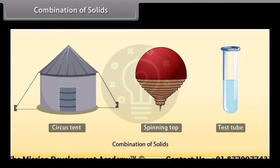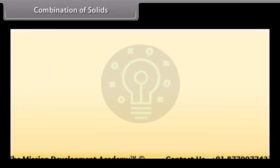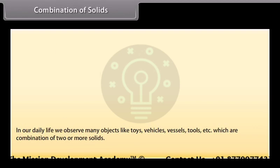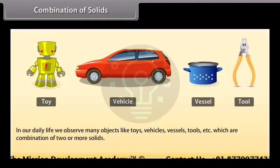A circus tent is a combination of a cone and a cylinder. A spinning top is a combination of a hemisphere and a cone. And a test tube is a combination of a hemisphere and a cylinder. In the same way, in our daily life we observe many objects like toys, vehicles, vessels, tools, etc., which are a combination of two or more solids. Let's learn to find their surface areas and volumes.